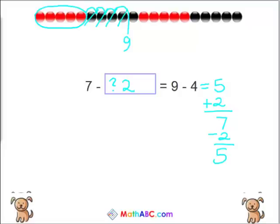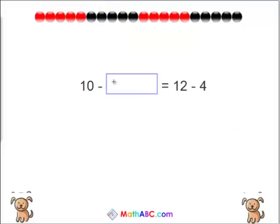Let's do another one. 10 minus something equals 12 minus 4. Okay? Let's first solve 12 minus 4. 5, 10, 11, 12, and let's cross off 4. 1, 2, 3, 4. What do we have left over?